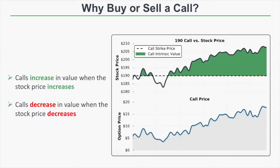In this example, the call option started near $5 and ended near $20. A buyer of that option would have a $1,500 profit per contract, while a seller of that option would have a $1,500 loss per contract. So call buyers anticipate that the stock price will increase because the call price will increase, and call sellers anticipate that the stock price will decrease because the call price decreases as the stock price falls.